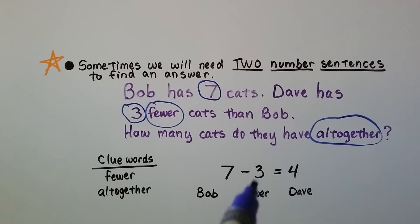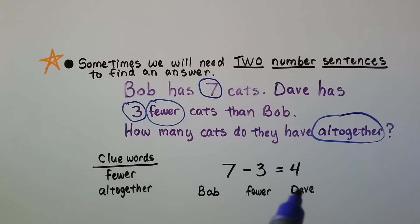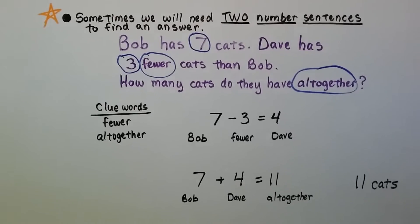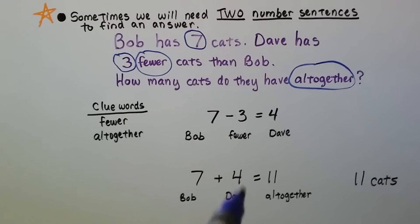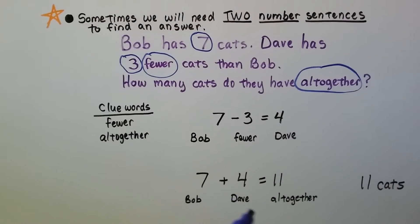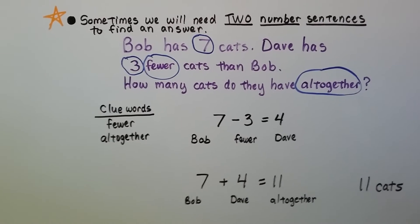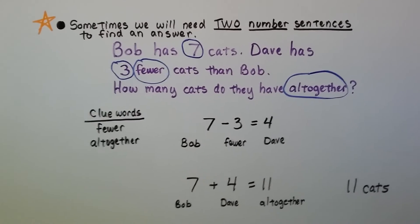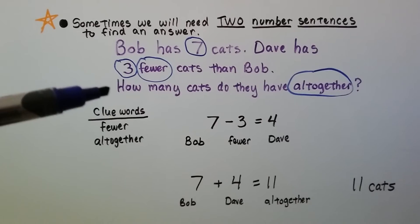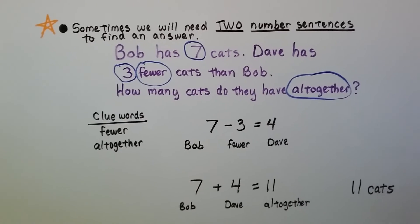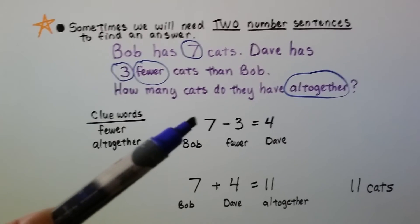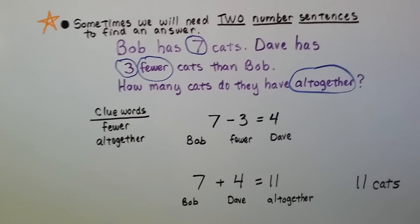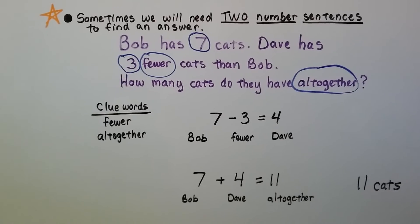Bob has seven, there are three fewer, so Dave has four. But how many do they have all together? Bob has seven, Dave has four. Seven plus four equals eleven all together. The answer is eleven cats. We make sure we answer what was being asked: how many do they have all together? So we had to write a subtraction sentence, then an addition sentence to solve this problem.